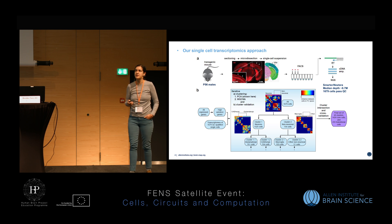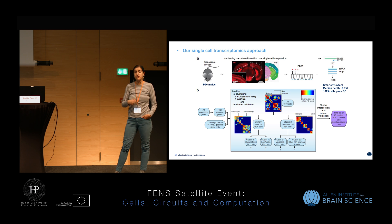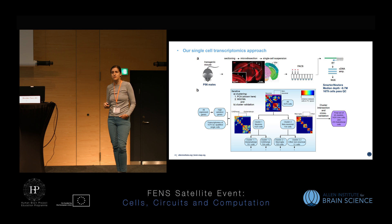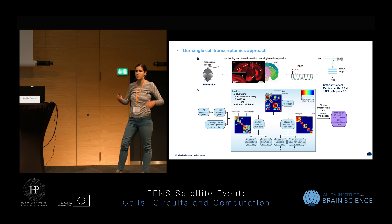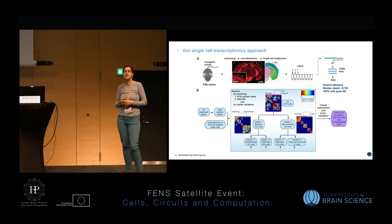Our main approach has been to take transgenic mice that we have generated or acquired from the community, go into well anatomically defined locations — we are focusing on the primary visual system for this study — and sort these cells using fluorescence-activated cell sorting. Each cell's RNA is then reverse-transcribed, amplified into cDNA, and sequenced by next-generation sequencing.